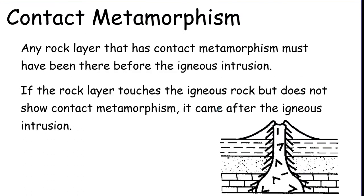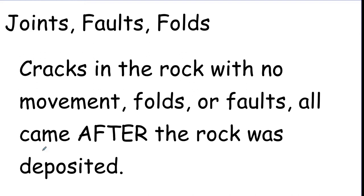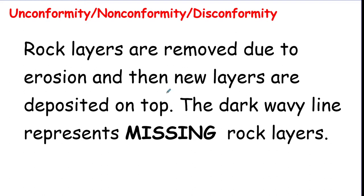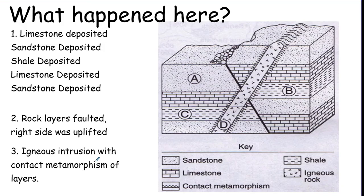If you see contact metamorphism, that had to happen after the rock layers were already there — you need rock to metamorphosize. An igneous intrusion also comes after rock layers were deposited. Faults, folds, or cracks also happen after the rock was there, because you can't break something that wasn't already there. An unconformity is a layer that was eroded away and then had a new layer deposited on top.